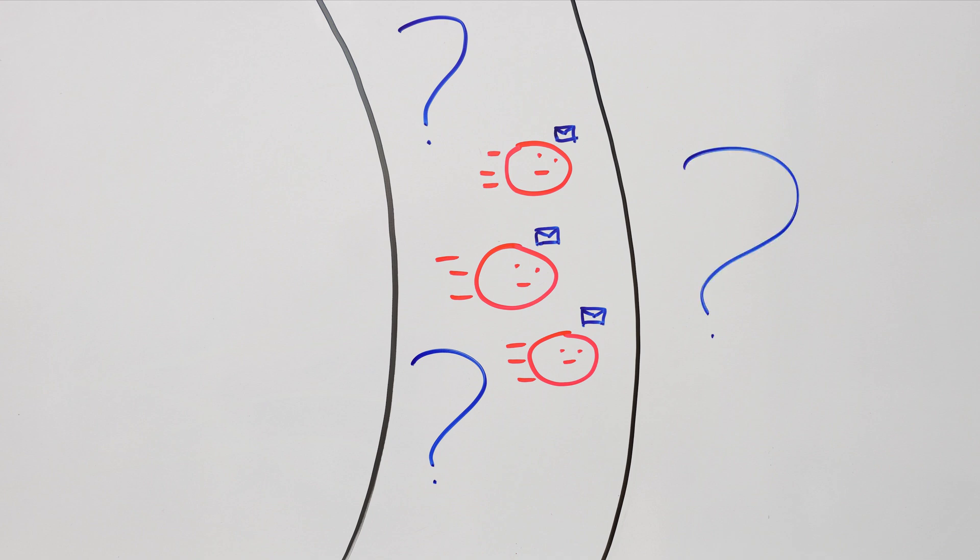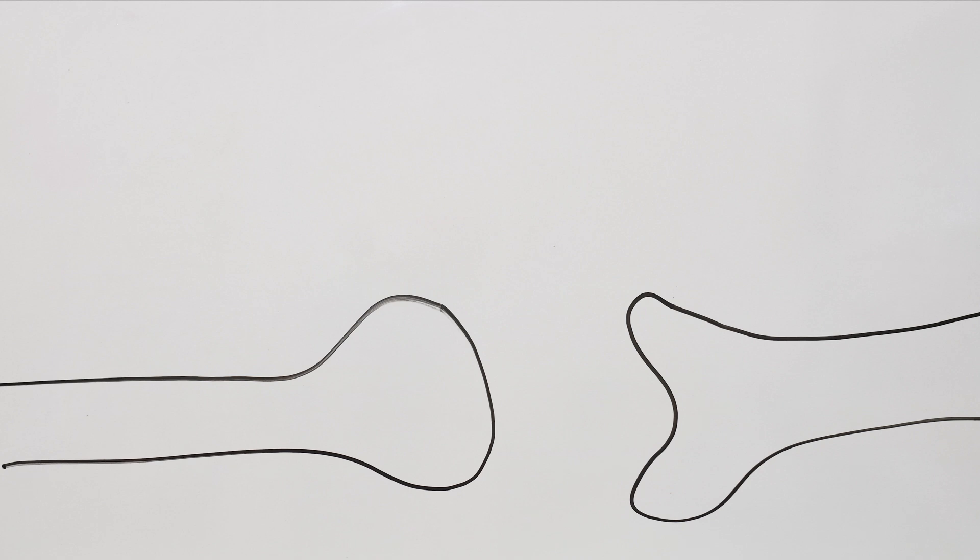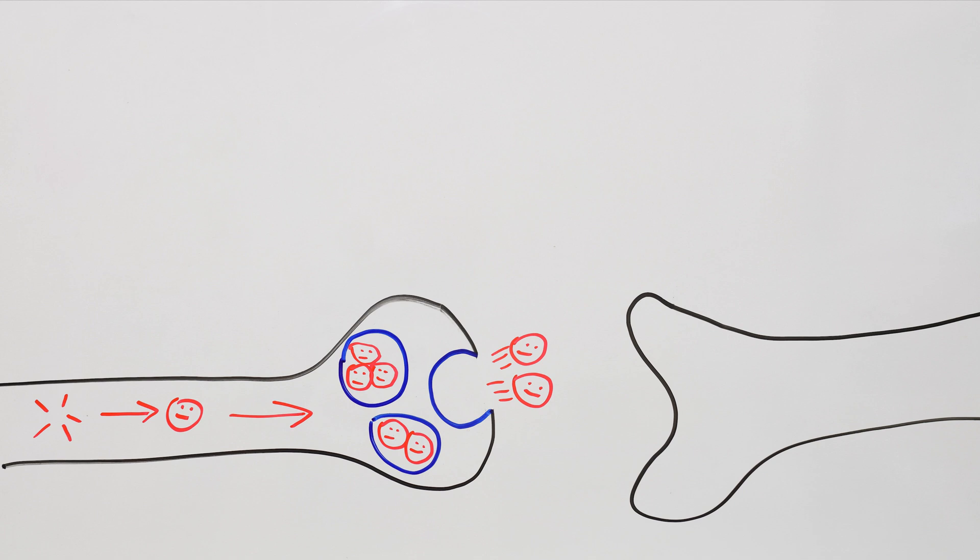In this video, we'll look at the story of the neurotransmitters: how they are born, how they get ready, the choices they face in the synaptic cleft, and what happens when they get to the other side.